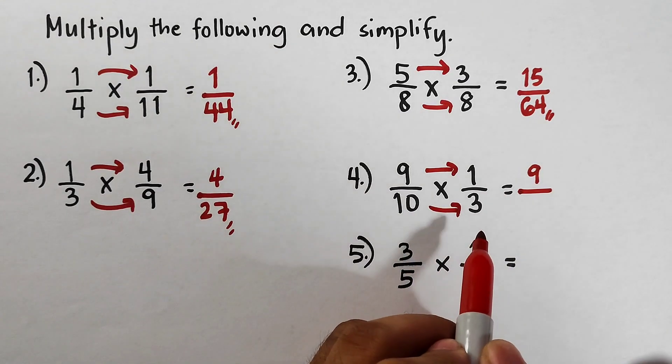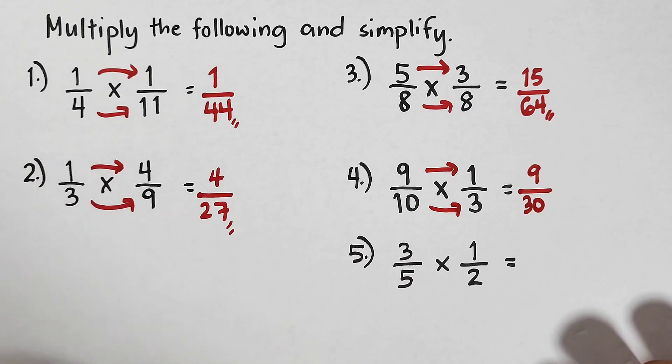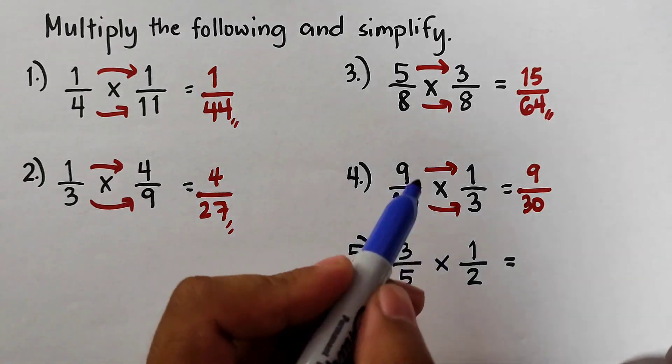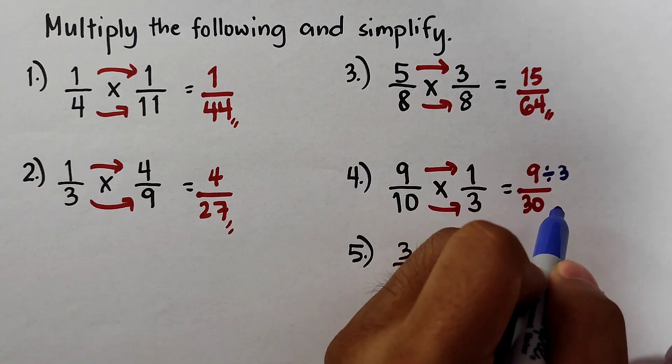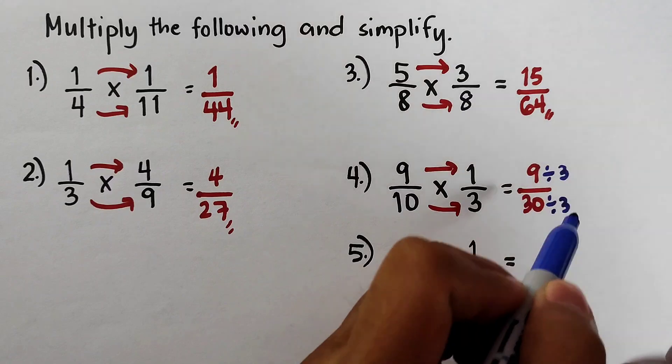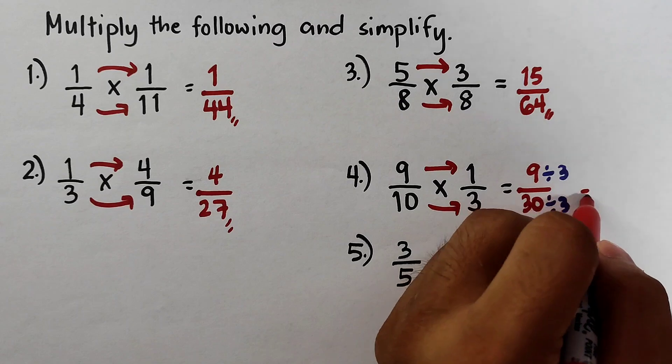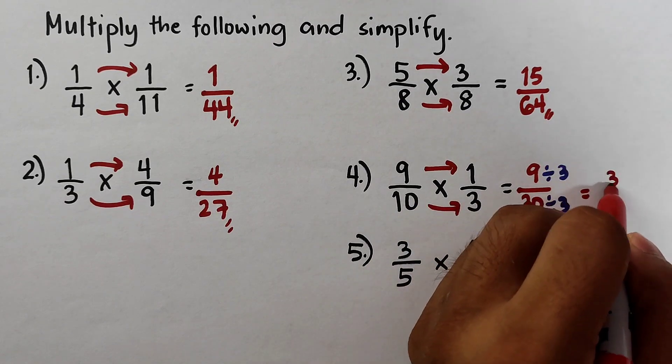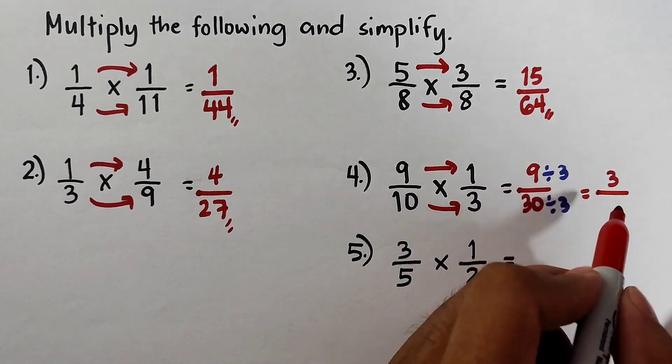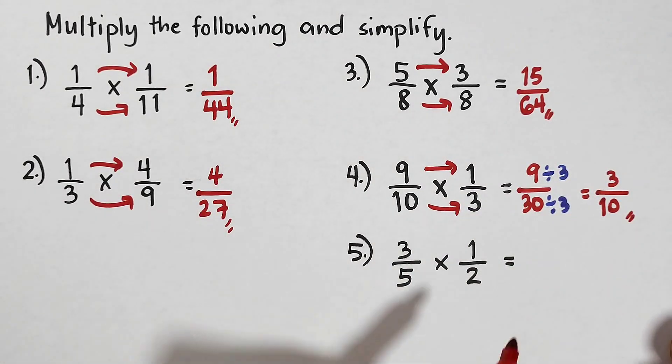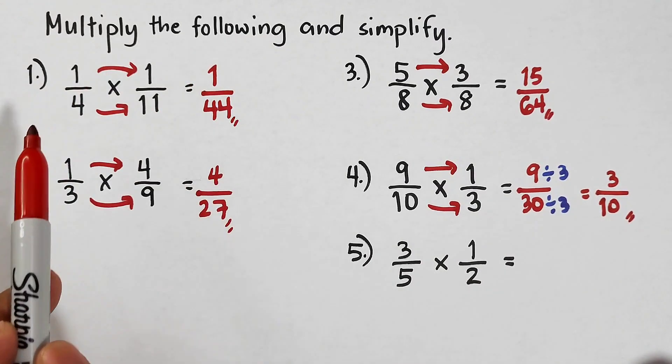Over 10 times 3, that would be 30. If you will notice, this 9/30 can be simplified. We can divide the numerator by 3 and also our denominator by 3 to get the simplest form. So let's divide: 9 divided by 3 is 3, over 30 divided by 3, that would be 10. Right now this is the simplest form of item number four.